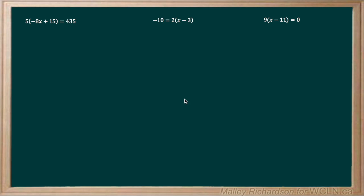In the first example, we have 5 times, in brackets, negative 8x plus 15, all equals 435. Now the first method that we are going to do is we are going to get rid of this 5 outside the brackets. We can see that this 5 is multiplied by the whole brackets, so to get rid of this 5, we can just divide both sides by 5.